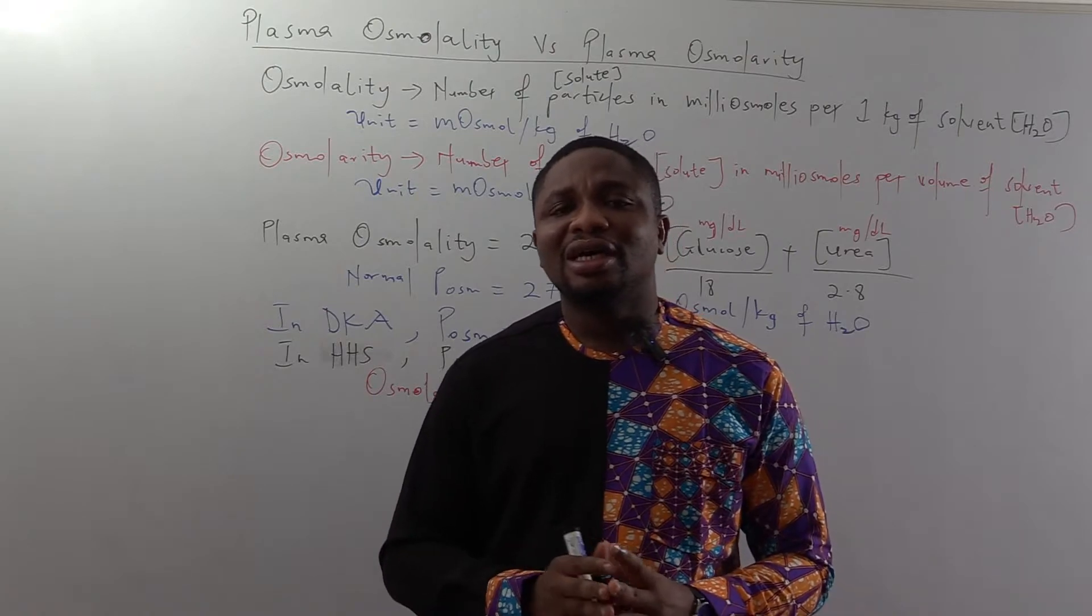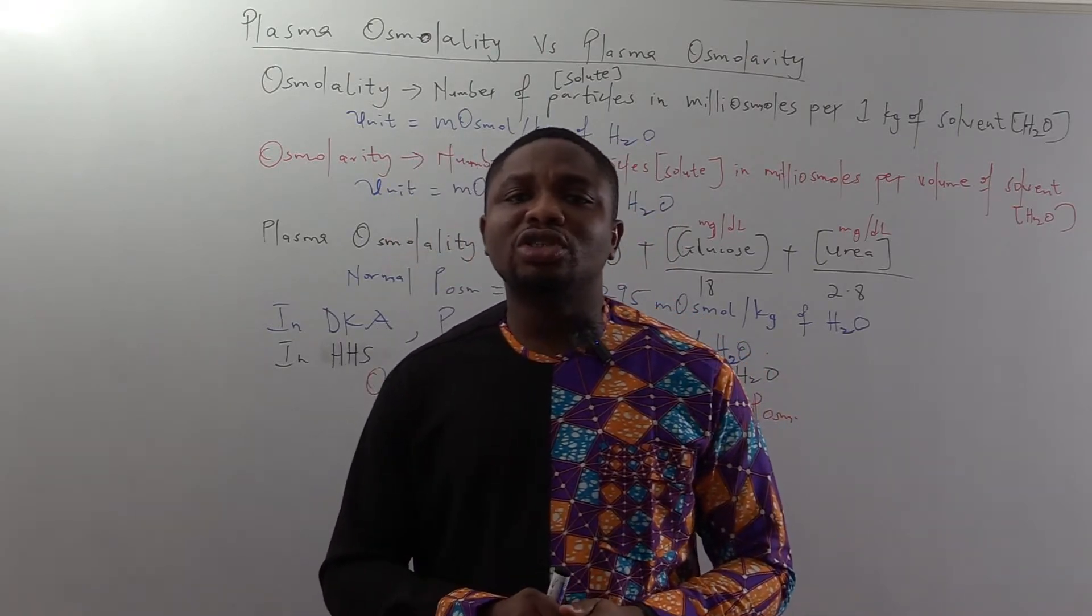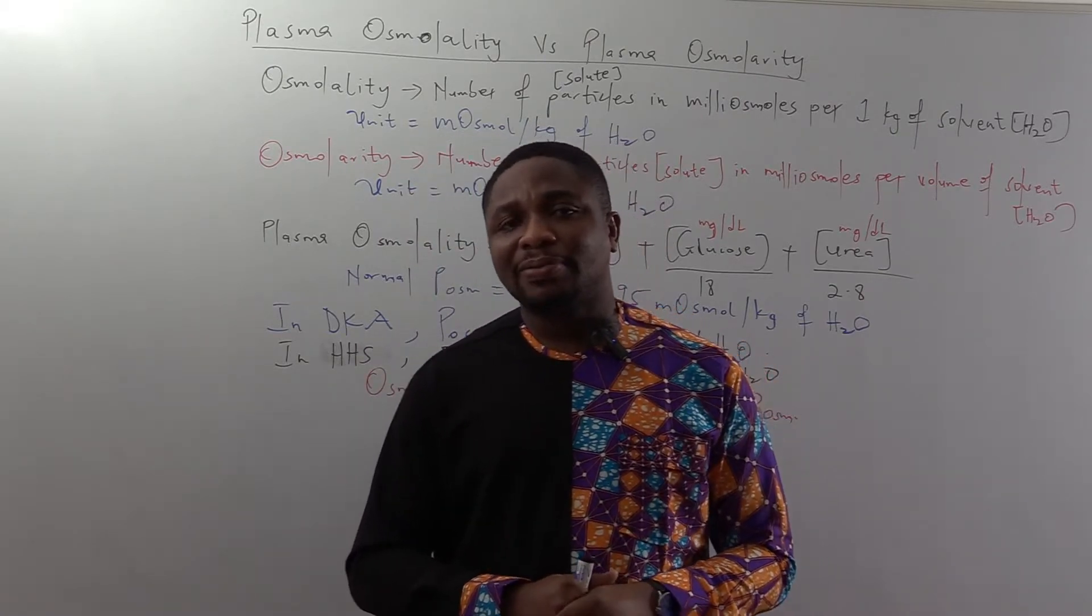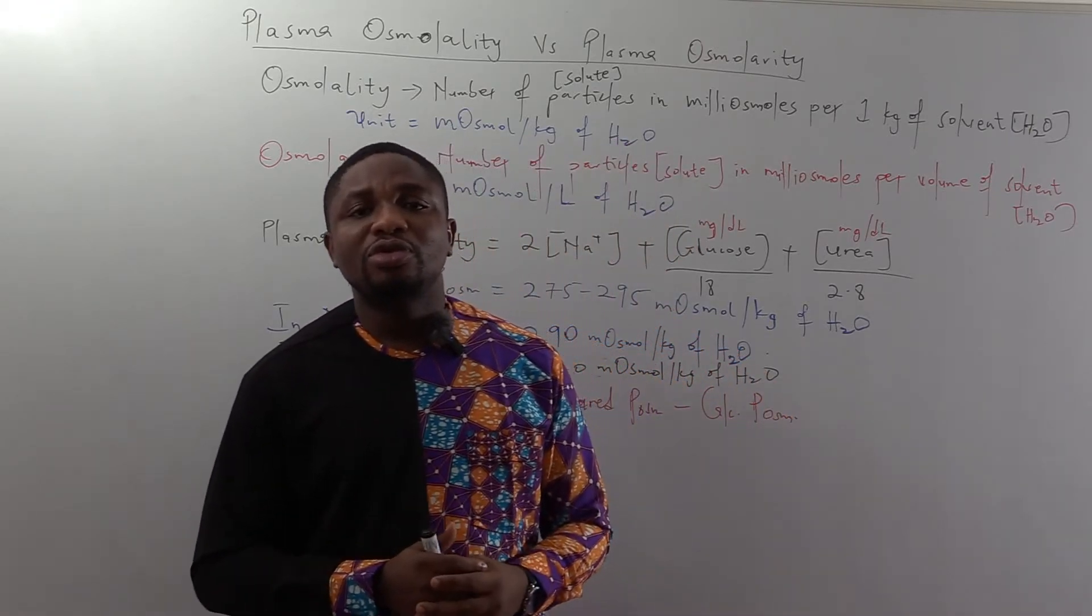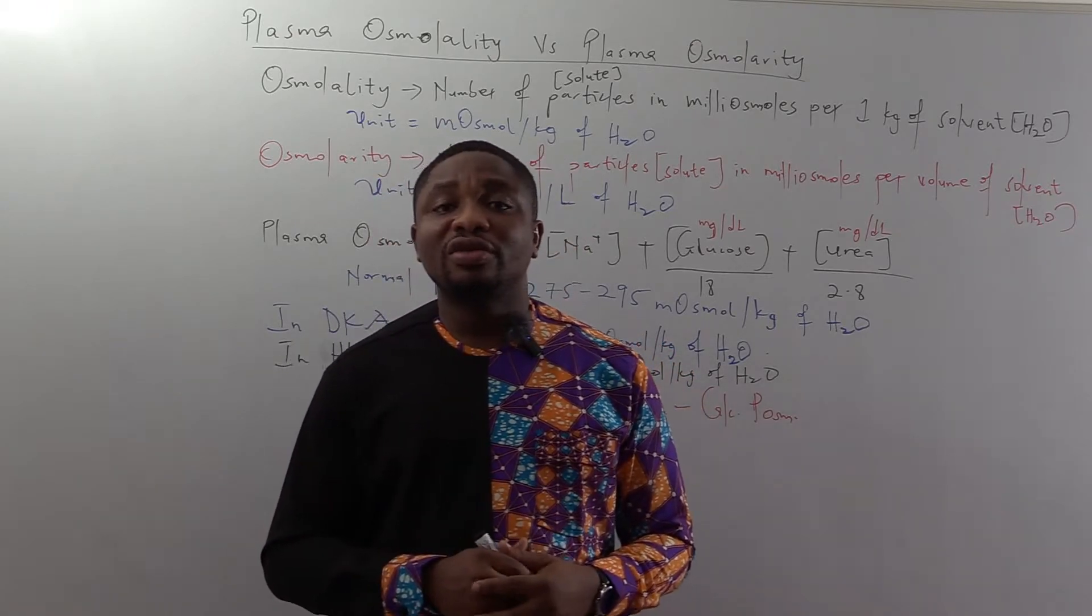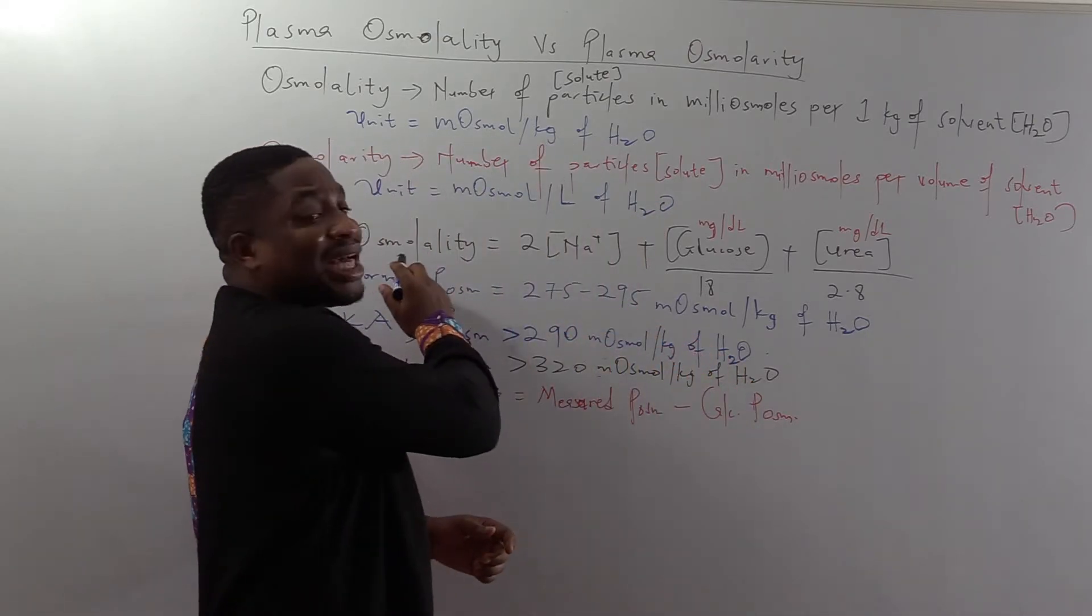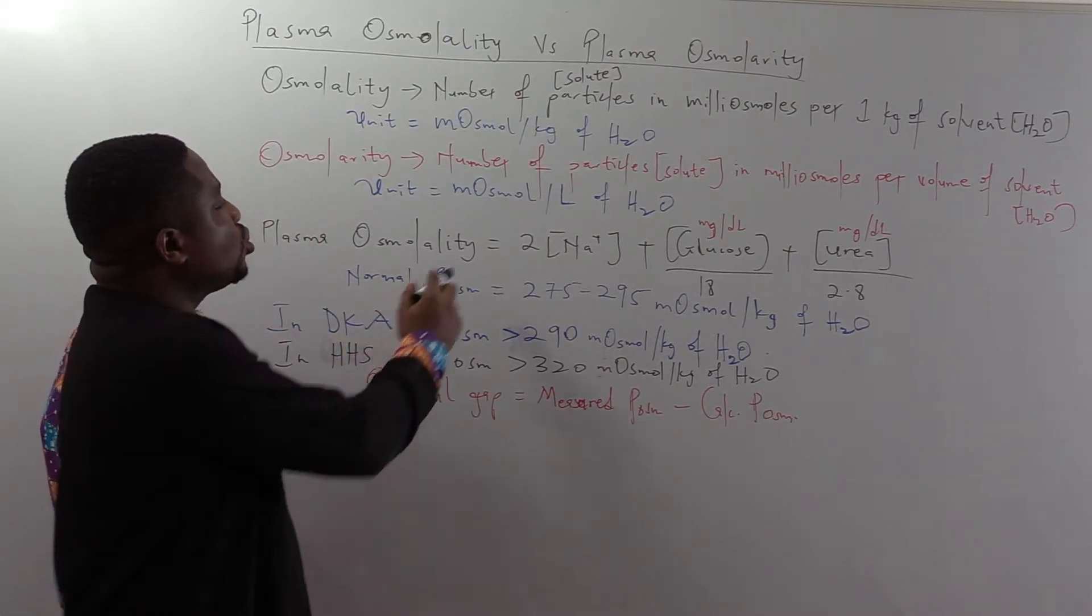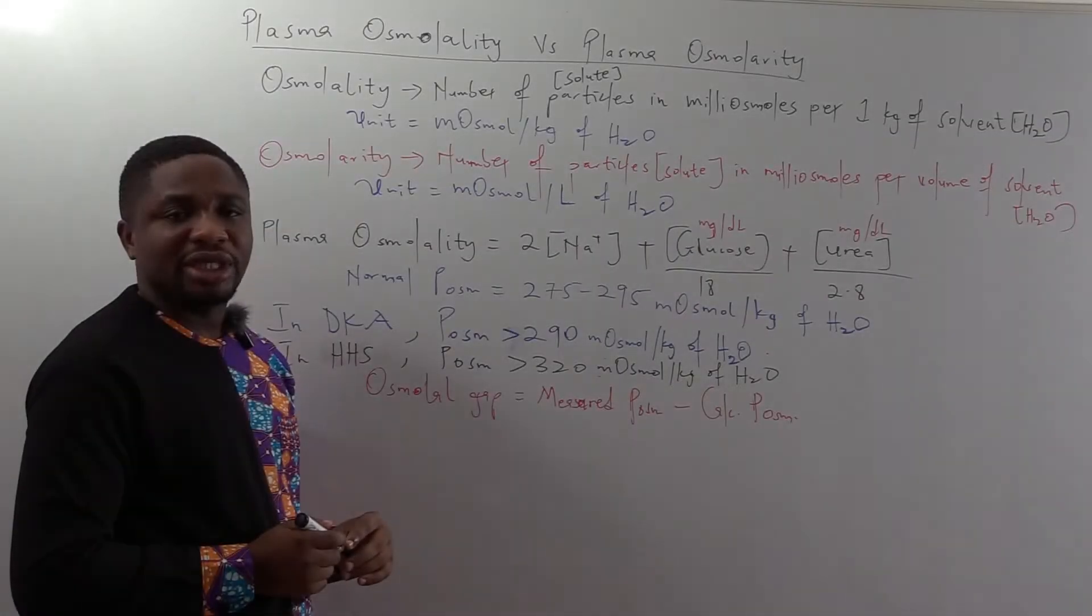Now let's look at how to calculate plasma osmolality, because we are going to be using that a lot in medicine. Plasma osmolality will require the concentration of sodium ions, glucose, as well as urea. We will say that plasma osmolality is equal to two times the concentration of sodium in normal SI unit.